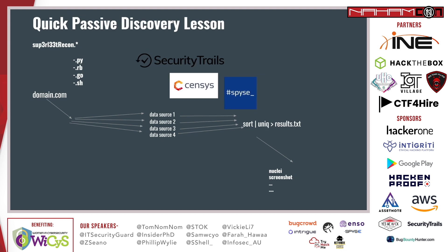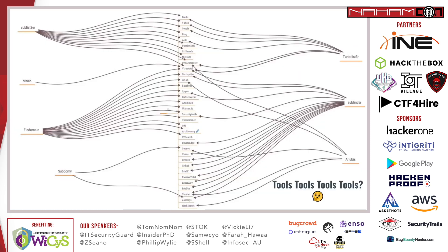Let's have a closer look at some of the most used tools for passive enumeration. I've put together a graph that links the used data sources to each tool. If you take a closer look, you can quickly identify that the usage of data sources is pretty inconsistent, and almost every tool uses a different set of data sources. By now you should also see the problematic part — the overlap that those tools generate is inconsistent.